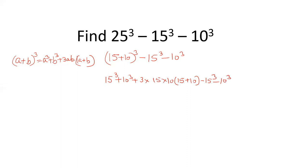Now check: 15 cube is positive and the other 15 cube is negative, so they cancel out. Similarly, 10 cube and 10 cube cancel out. We are left with 3 into 15 into 10 into 25. We just need to multiply these three numbers to get the answer.